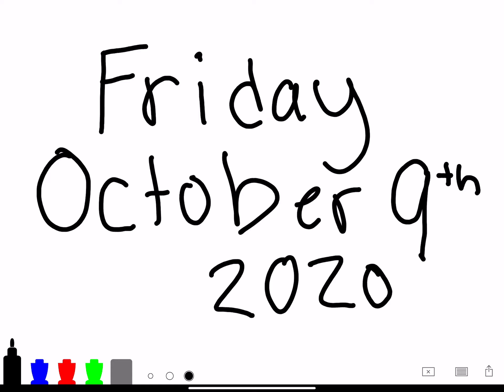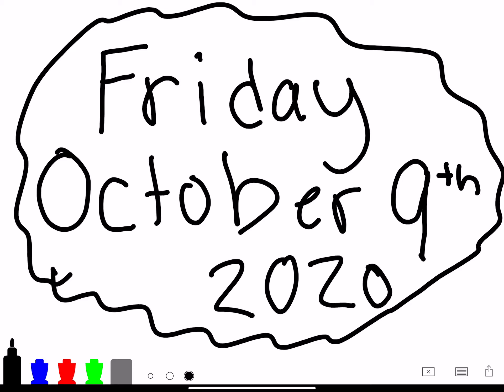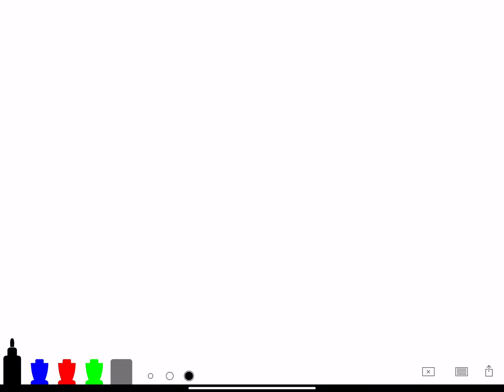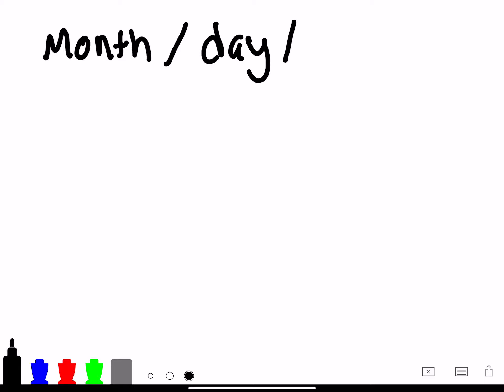Now let's figure out how we can write this date into numbers. So this is the date in words, but we're going to try to write this date in number form. So usually when people write the date in number form, they include the month, the day, and the year. There are 12 months of the year, and we are in the month of October. So let's count aloud — I'm going to say the month of the year and we are going to hold our fingers while saying the name of the month.